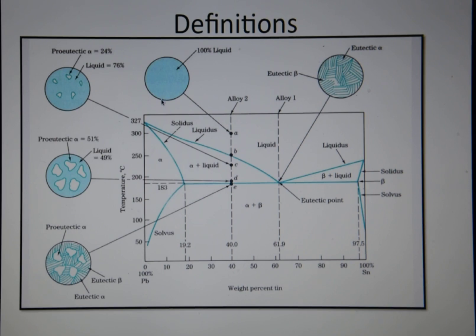Now these points here are the melting points of solid lead, of pure lead 327 and this point here is the melting point of pure tin.